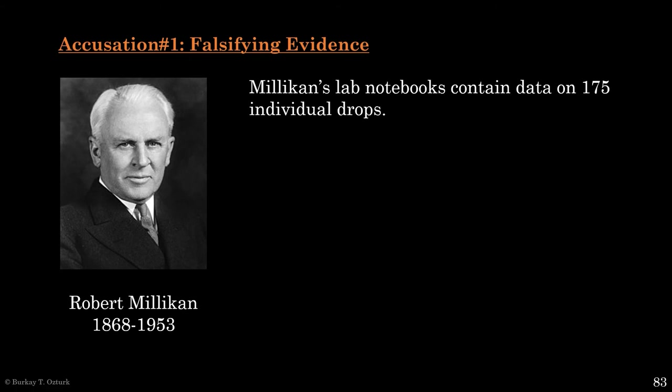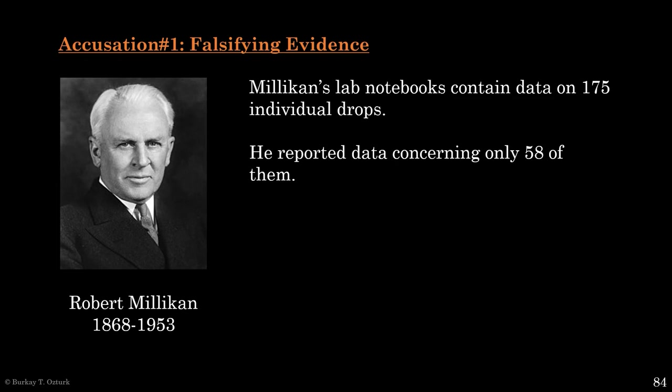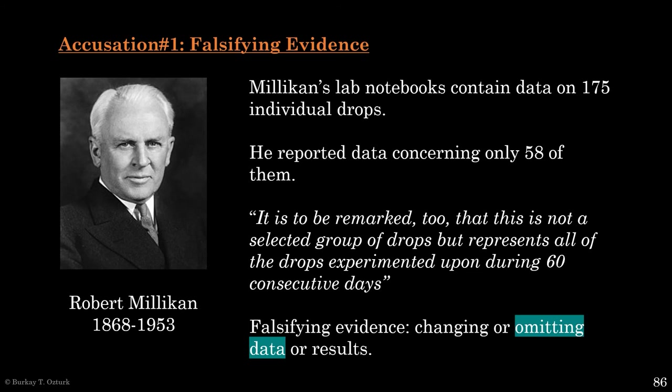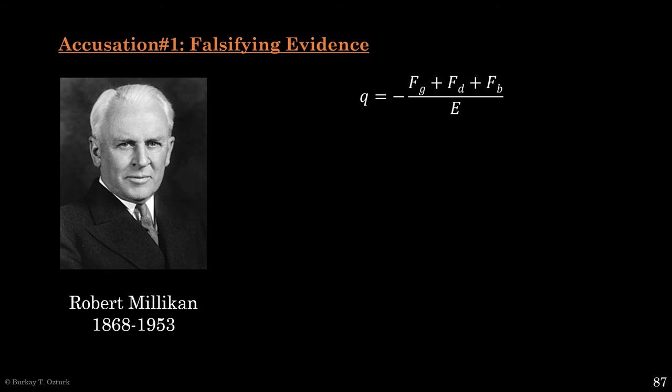Moving on to the accusations. The first accusation is that Millikan falsified evidence. Millikan's lab notebooks contain data on 175 individual drops; however, in the research paper reporting the results, he reports data on only 58 of them. What is more, he says: 'it is to be remarked that this is not a selected group of drops, but represents all of the drops experimented upon during 60 consecutive days.' Remember, falsification is changing or omitting data or results. Here it seems obvious that Millikan omitted data — or is it?